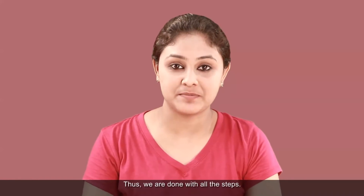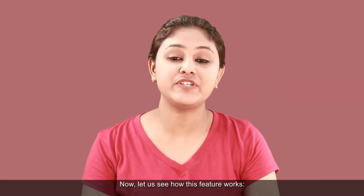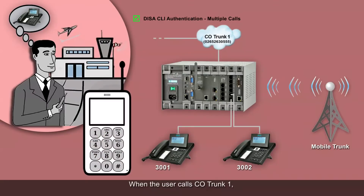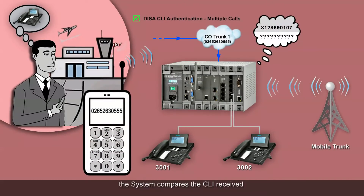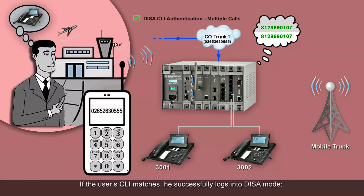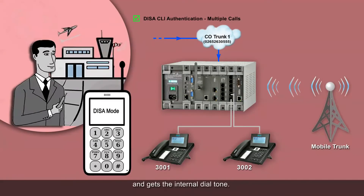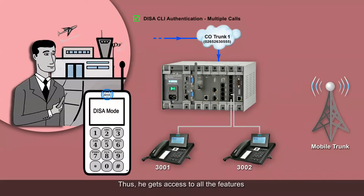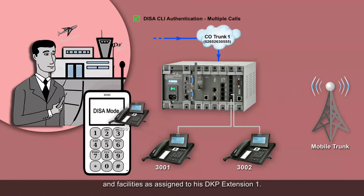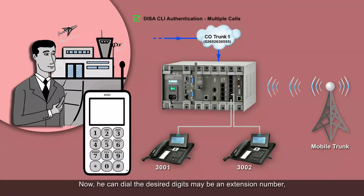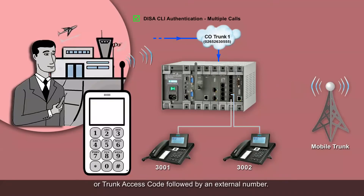We are done with all the configuration steps. Now let us see how this feature works. When the user calls CO trunk 1, the system compares the CLI received with the number programmed in the CLI authentication table. If the user's CLI matches, he successfully logs into DISA mode and gets the internal dial tone, giving him access to all features and facilities assigned to his DKP extension. He can then dial the desired digits — an extension number or a trunk access code followed by an external number.